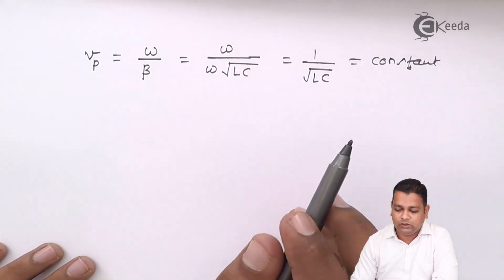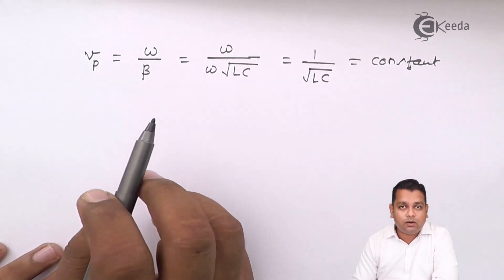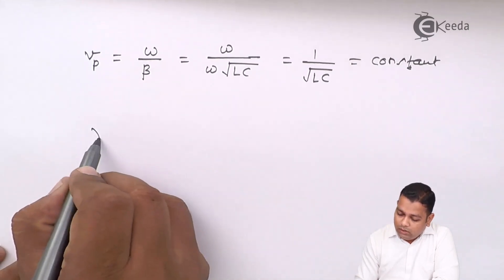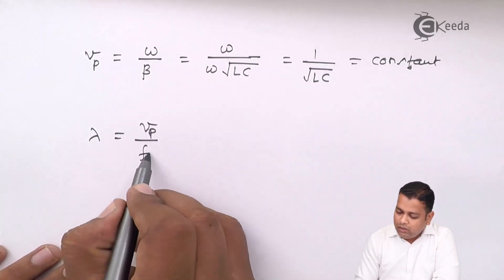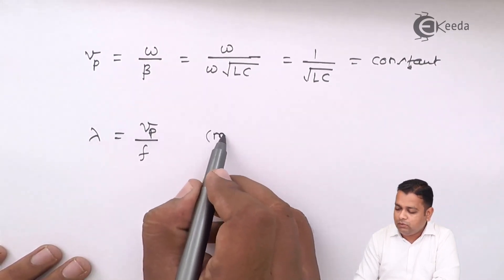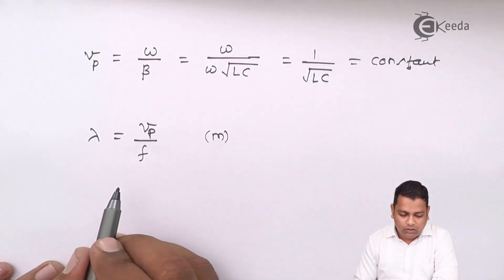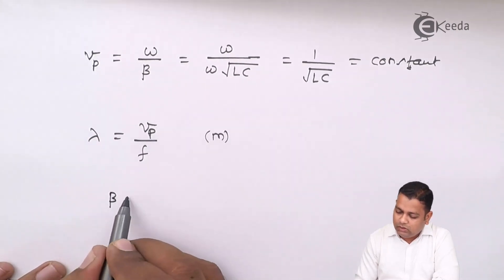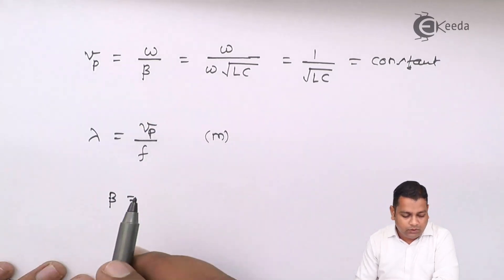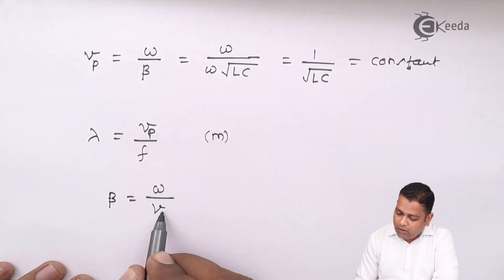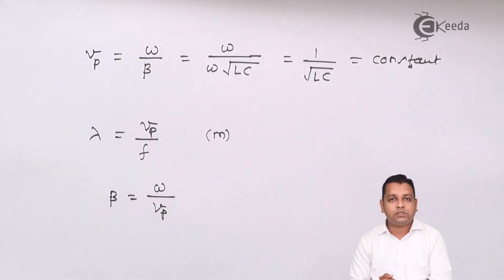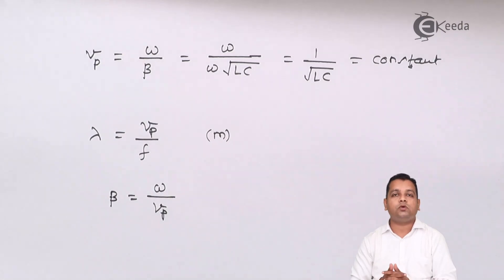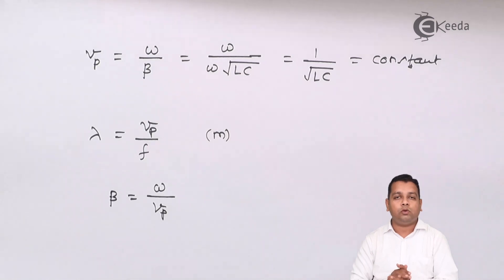The velocity is independent of frequency. The wavelength lambda can be represented by the phase velocity V_p divided by the frequency, measured in meters. The phase shift constant beta can be written as ω divided by V_p. This was all the information regarding the lossless transmission line. In the next video we shall see the characteristic impedance and other parameters for the lossy transmission line.